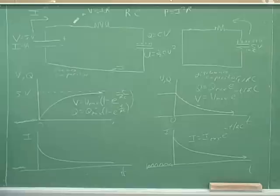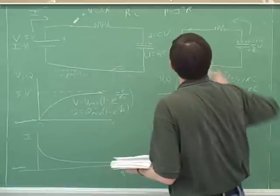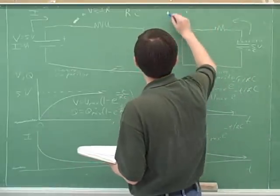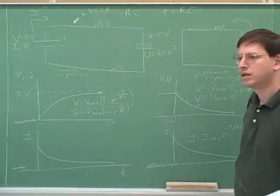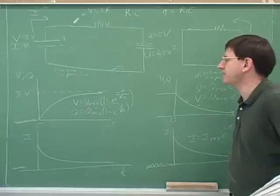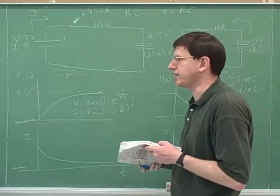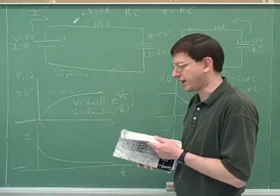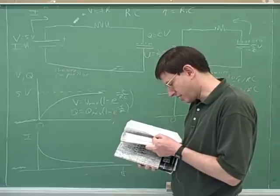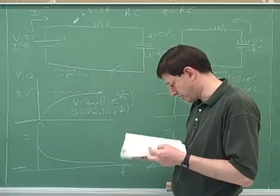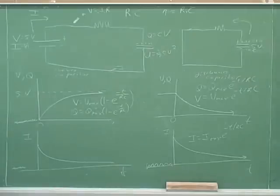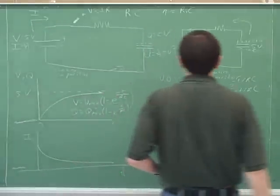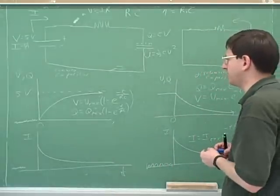Actually, I guess we should say one little bit about this. The symbol for the time constant is tau. The time constant tells us how long it's going to take to get two-thirds of the way to our asymptotic limit.